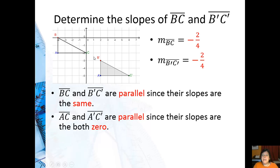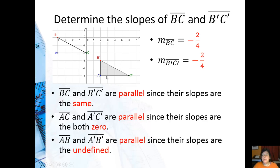AC and A'C' are also parallel, because their slopes are zero, that is they're completely horizontal. And then AB and A'B' are parallel, since both of their slopes are undefined, that means they're going straight up and down.